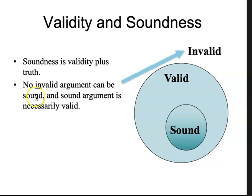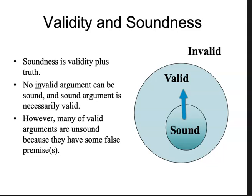No invalid argument can be sound — they don't have any relationship to soundness. And a sound argument is necessarily valid. There are valid arguments that are unsound because they have false premises. Validity is kind of a negative definition: we're not going from true premises to a false conclusion. But a valid argument could go from false premises to a false conclusion, because it's not going from true to false.